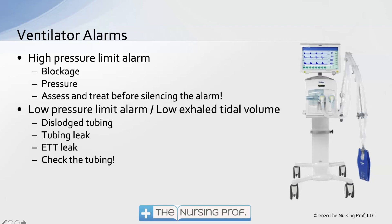One of the first things we would use to find a complication is our ventilator alarms. The ventilator is set up with our patient and it knows a few things — it knows about pressure, volume, and rate. It doesn't know how your patient's doing, so we always need to look at the patient when assessing ventilator alarms.